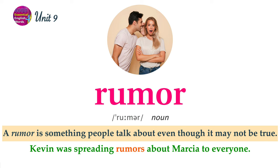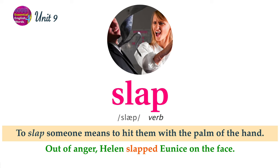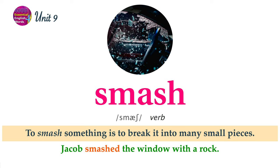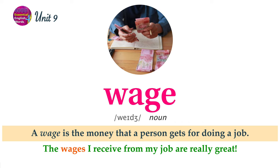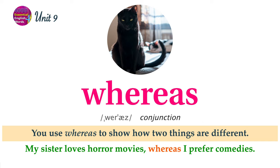If someone is pessimistic, they believe that the worst will happen. John is pessimistic. He always thinks something bad will happen. A rumor is something people talk about even though it may not be true. Kevin was spreading rumors about Marcia to everyone. To slap someone means to hit them with the palm of the hand. Out of anger, Helen slapped Eunice on the face. To smash something is to break it into many small pieces. Jacob smashed the window with a rock. A subject is the topic that is being discussed or taught. The subject of Marco's speech was the economy. A wage is the money that a person gets for doing a job. The wages I receive from my job are really great. You use whereas to show how two things are different. My sister loves horror movies, whereas I prefer comedies.